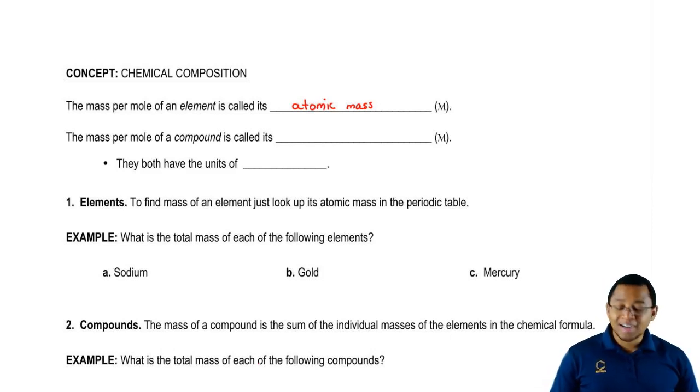When it comes to the mass per mole of a compound, a compound is made up of more than one element combined. They could be the same element or different elements combined together. We no longer call it atomic mass, but instead we call it molar or molecular mass.